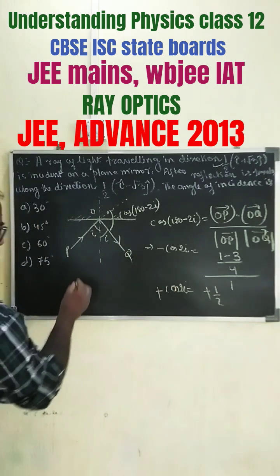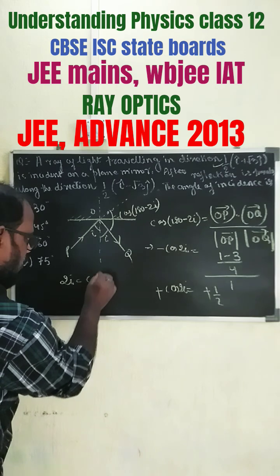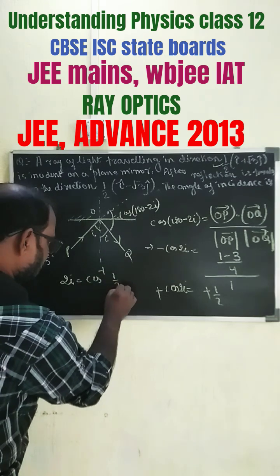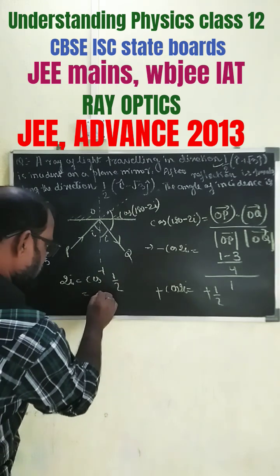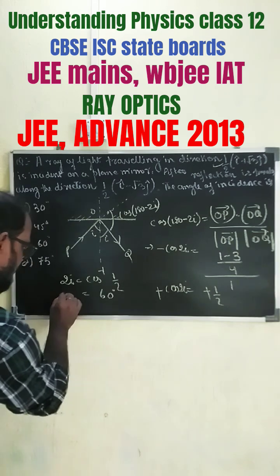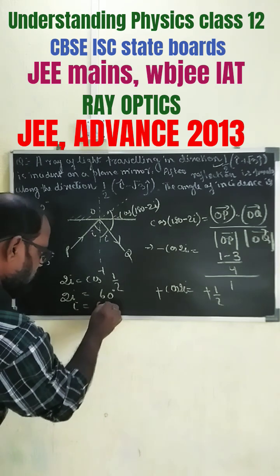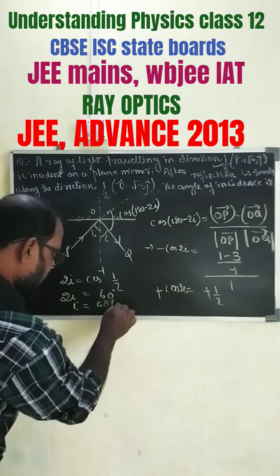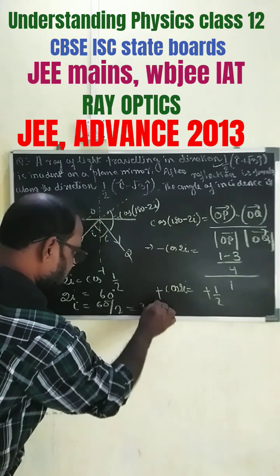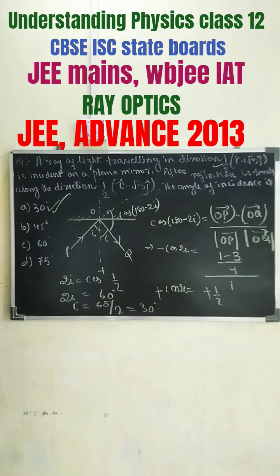This gets cancelled, so from here we get 2i equals cos inverse of half, which equals 60 degrees. Therefore i equals 60 divided by 2, which equals 30 degrees. So our answer is the first option.